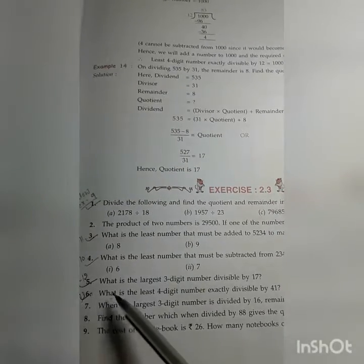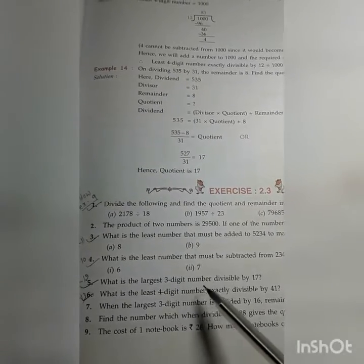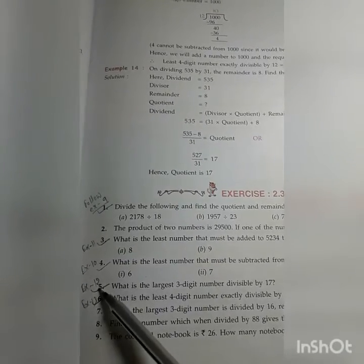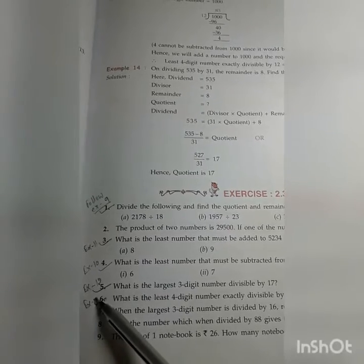Then number five. What is the largest three-digit number divisible by 17? This one also already given in your book. Example 12, you follow.